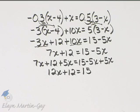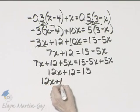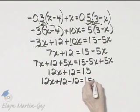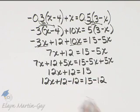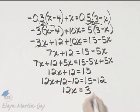And now let me subtract 12 from both sides. So the left side, 12x plus 12 minus 12 is equal to 15 minus 12. The left side is 12x, the right side is 3.